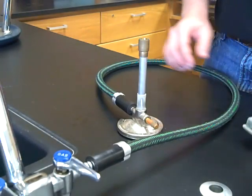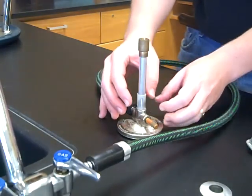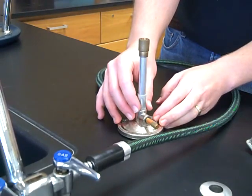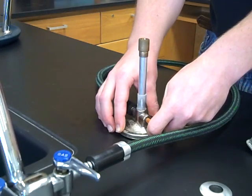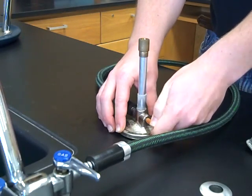Before you ignite the Bunsen burner, remember that we close the air vents totally, and we close the needle valve completely finger tight, and then two half twists open.